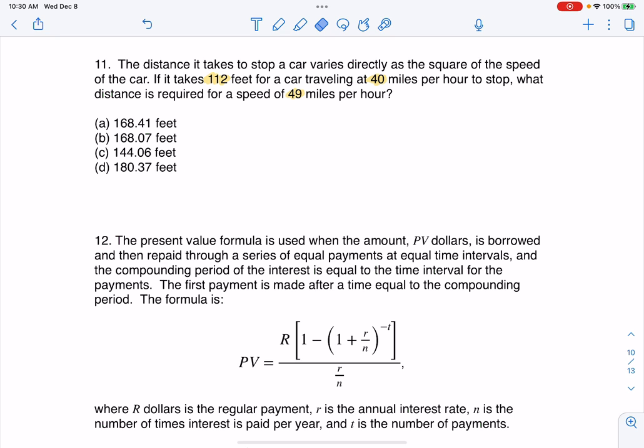All right, but the key phrase to take away from here is this varies directly. So once we see varies directly, that lets us set up our variation equation. So I can say distance is equal to some constant proportionality times the, if we look at it, it says square of the speed.